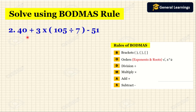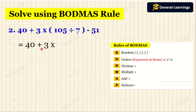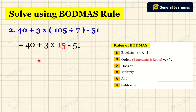Now we will see another example. Here they have given: 40 plus 3 into bracket 105 divided by 7 minus 51. According to the BODMAS rule, first we need to solve the bracket. When we divide 105 by 7 we get 15, so we write 40 plus 3 into bracket 15 minus 51.